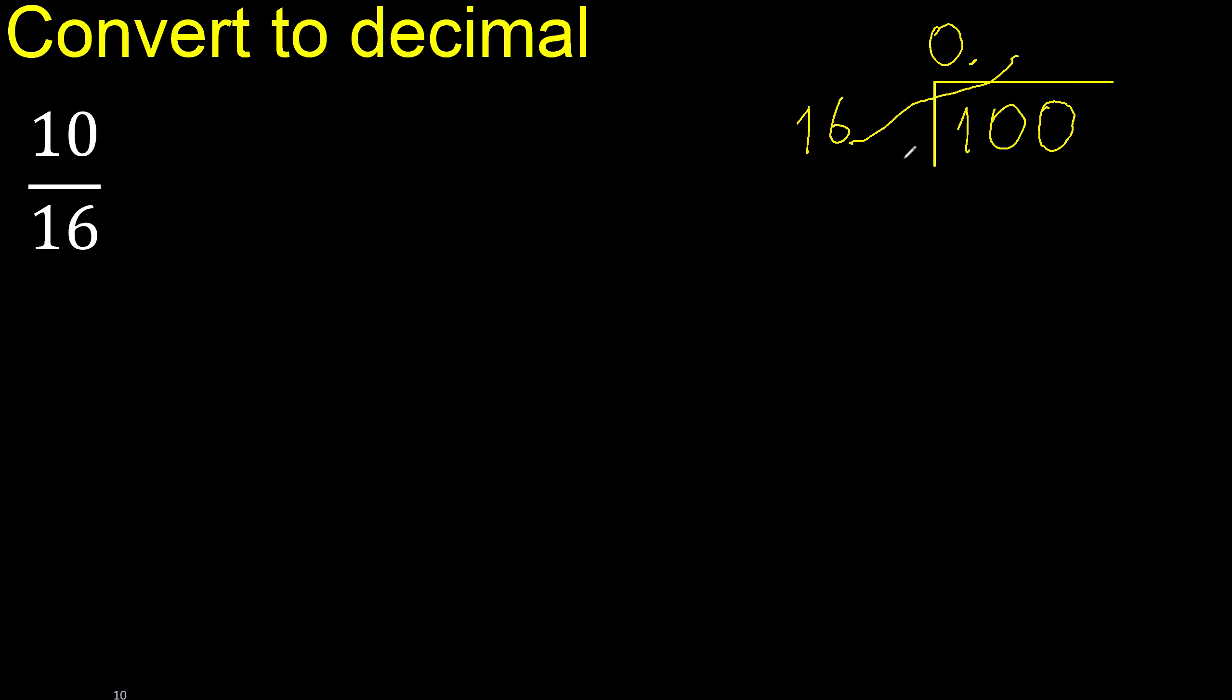16 multiply by 7 is 112, is greater. Multiply by 6 is 96, ok, is not greater.